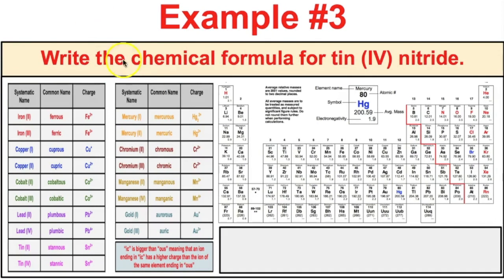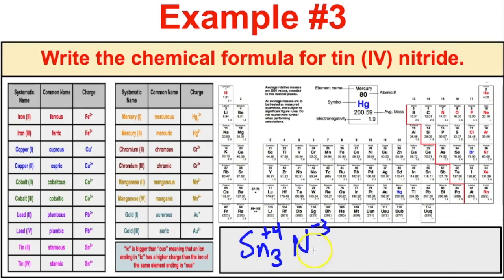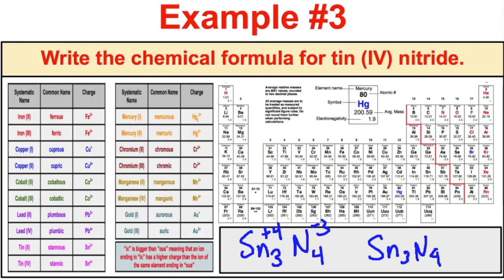For tin(IV) nitride: tin 4 is Sn with a plus 4 charge, and nitride is N minus 3. These don't add up to 0, so you need three tin and four nitride — 3 times positive 4 is positive 12, and 4 times negative 3 is negative 12, which adds up to 0. Sn₃N₄ is the correct chemical formula for tin(IV) nitride.